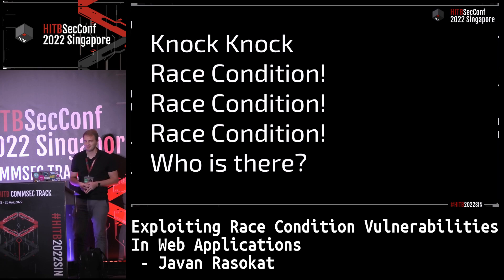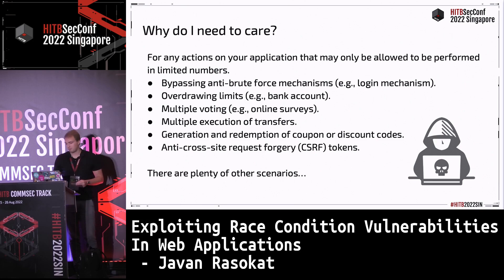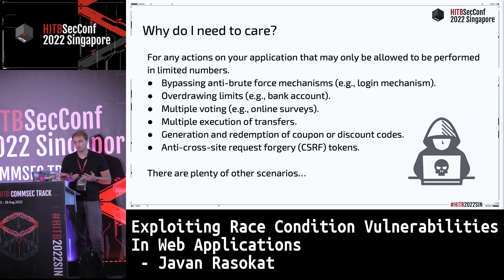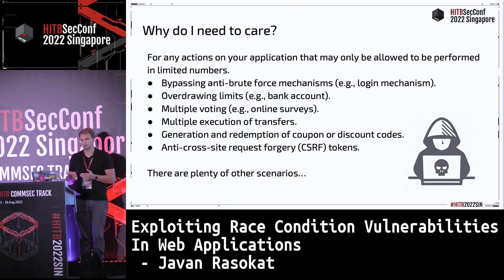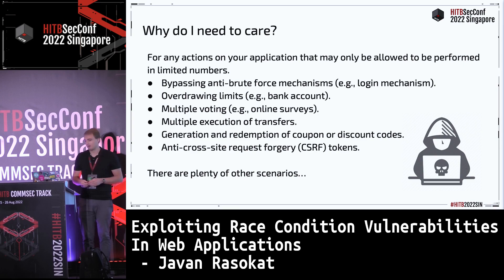When does this become a security issue? There are many examples. It's often relevant when you have an anti-brute-force mechanism with a rate limit — if you can bypass that rate limit, it becomes a security issue. Another scenario we've seen and implemented in the demo application: when you have a banking account and you withdraw money, there's a check which prevents you from overspending. But by exploiting the race condition vulnerability, you're able to overspend your account.